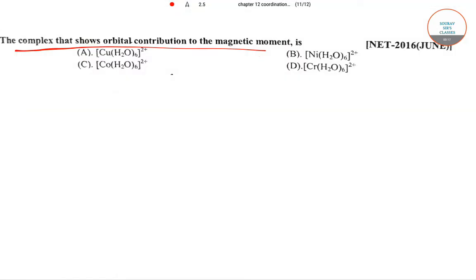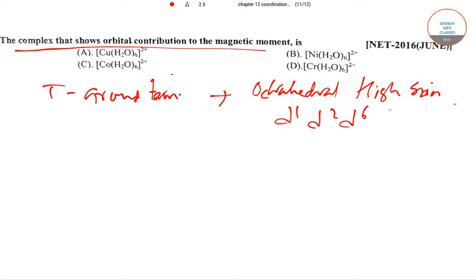...we need T ground term complexes. So those compounds which are octahedral and have high spin, have configuration d1, d2, d6, and d7, has T ground state.